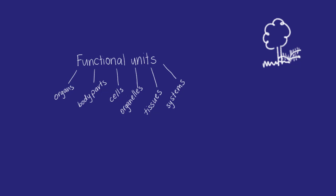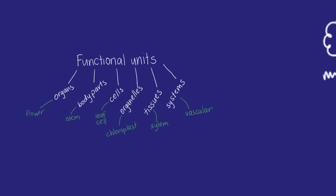All things have functional units or specialized features that help them live, grow and reproduce. We've been talking a lot about plants in these videos, so let's zoom out for a second.